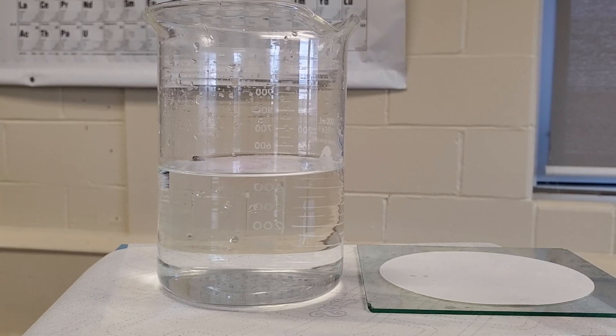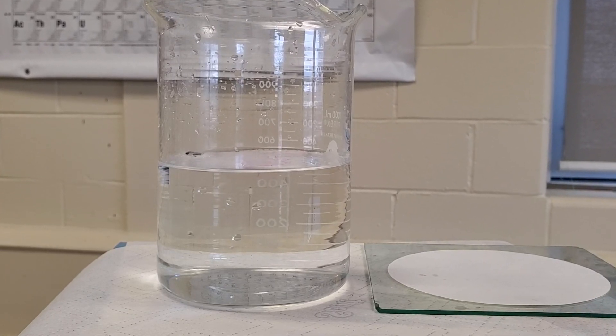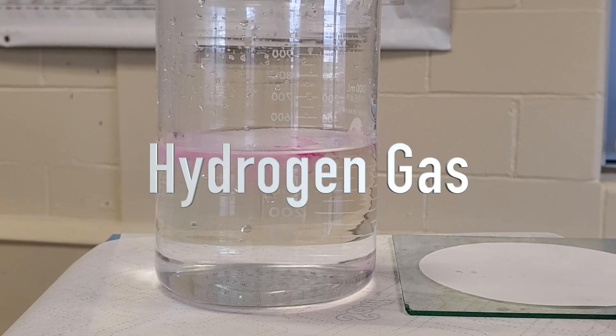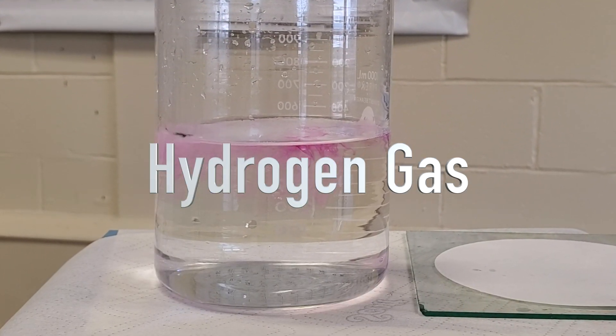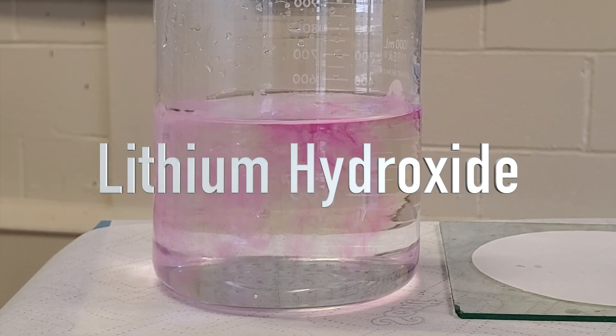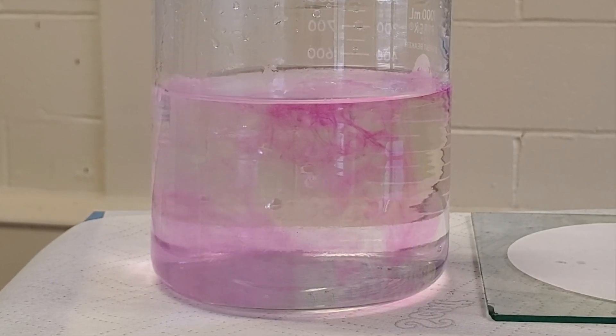You can see the lithium sample skimming around the water surface. Pretty reactive for a metal. The gas you see being formed is hydrogen gas. The water is turning pink because the solution forming is lithium hydroxide which is basic and hence why they call it the alkali metals.